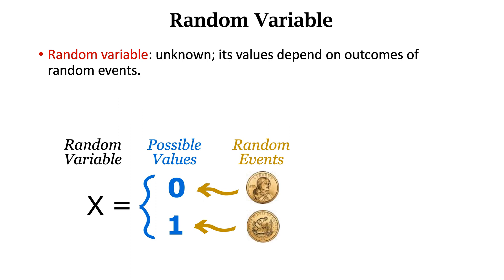But I can describe the event using probabilities. With probability 0.5, X is equal to zero, which means the outcome is head. With probability 0.5, X is equal to one, which means the outcome is tail.